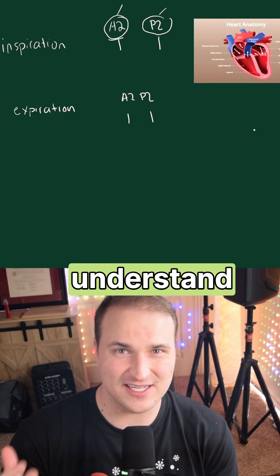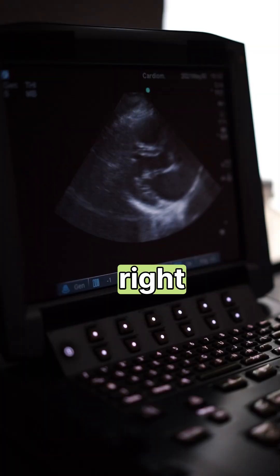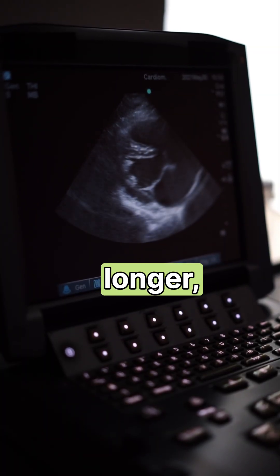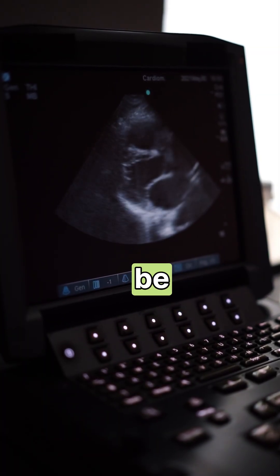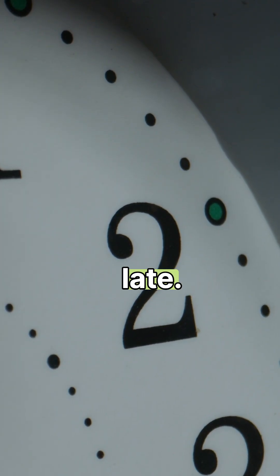And you can really just understand this by asking yourself, which ventricle is taking longer to eject? If the right ventricle ejection is longer, then P2 is going to be late. If the left ventricle ejection is longer, then A2 is going to be late.